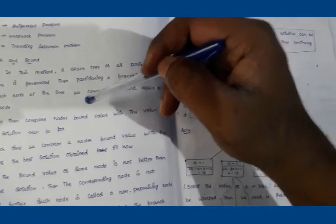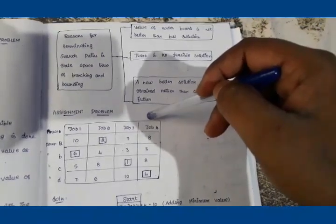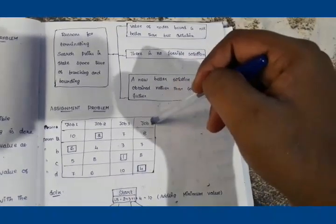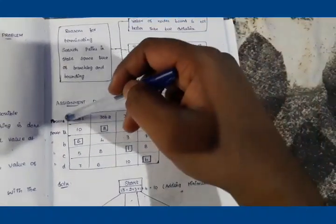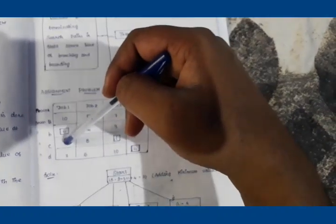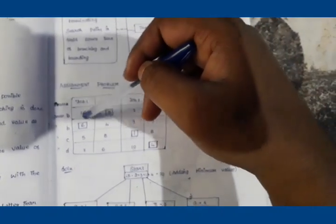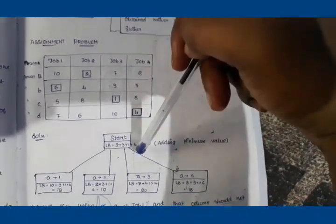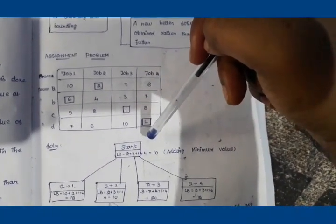Now we will look at the Assignment Problem. In this problem, we are given Job 1, Job 2, Job 3, and Job 4, and Person A, Person B, Person C, and Person D. This table will be given in the question. From this, we need to generate the state space tree.